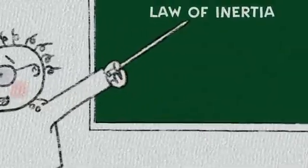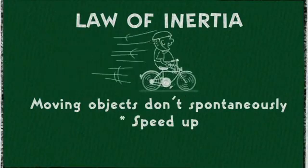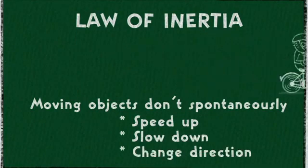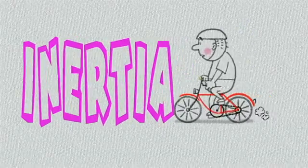Physicists call it the law of inertia, which is a fancy way of saying that moving objects don't spontaneously speed up, slow down, or change direction. It is this inertia that you must overcome to get your bicycle moving.